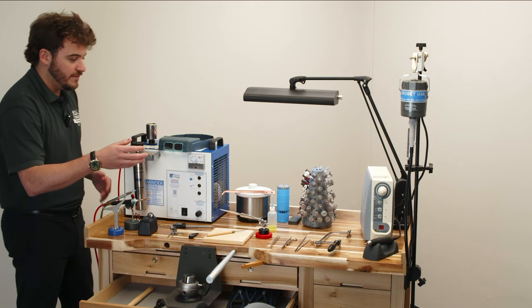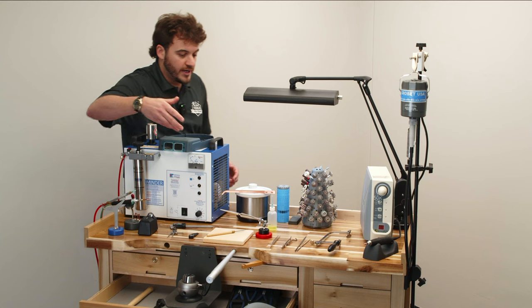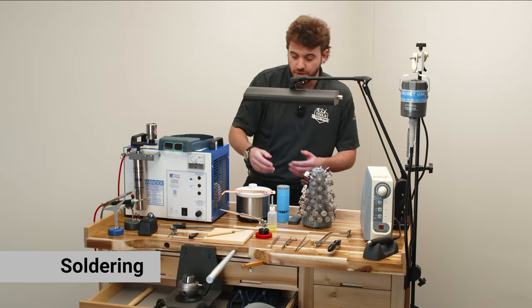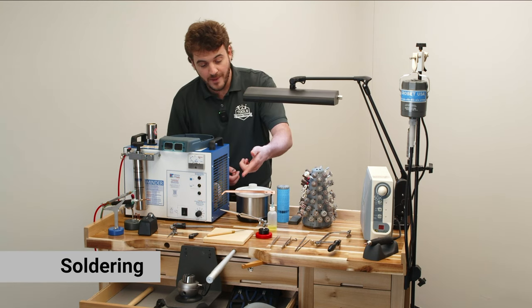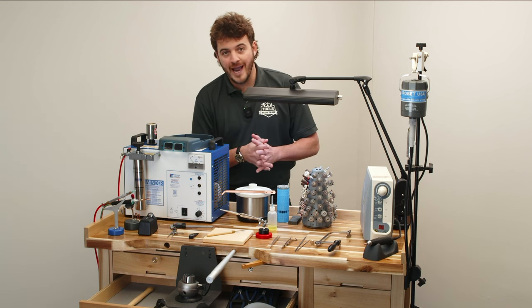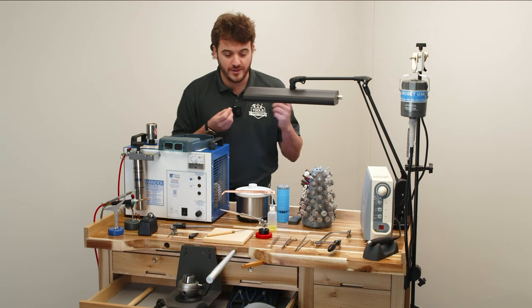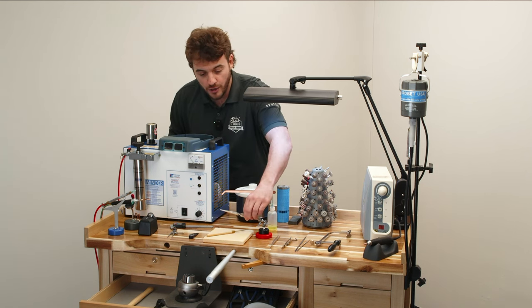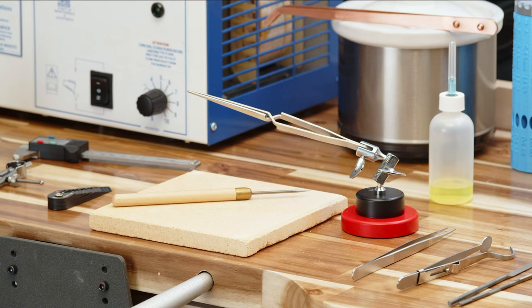Going a little bit further into the bench, as you're welding, you're going to need your soldering tools. So your actual soldering pick and third hand, as well as your soldering board. This is going to allow you to work hands-free and use the torch in one hand, the soldering pick in the other, while the soldering, the third hand, actually holds the ring for you.